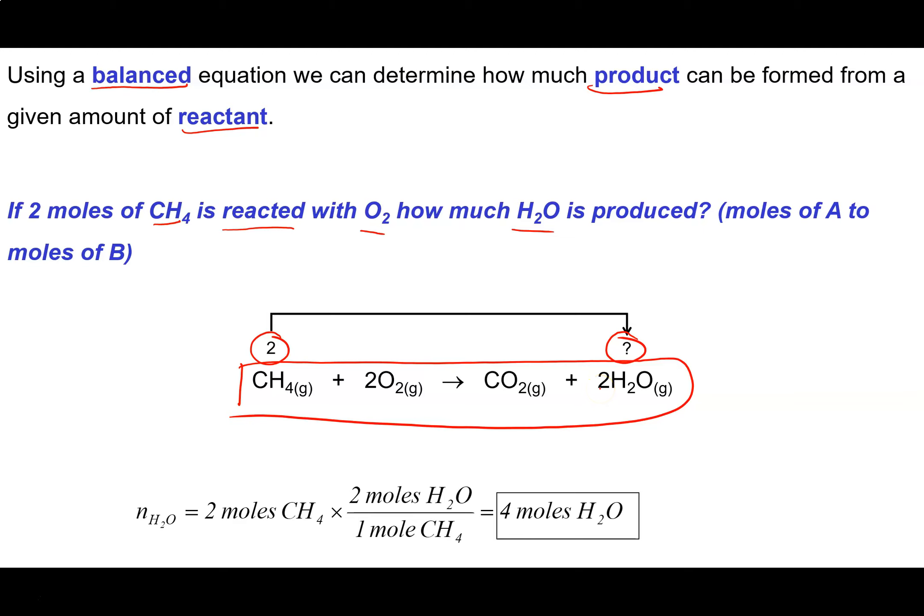I know that I'm going to produce two moles of water for every one mole of methane consumed. So if I'm consuming two moles of methane, then I just multiply that by the appropriate mole ratio that converts moles of water into moles of methane. So I know that I get two moles of water for every one mole of methane. And there we go. This is telling me that I could make, at most, four moles of water. Pretty straightforward.